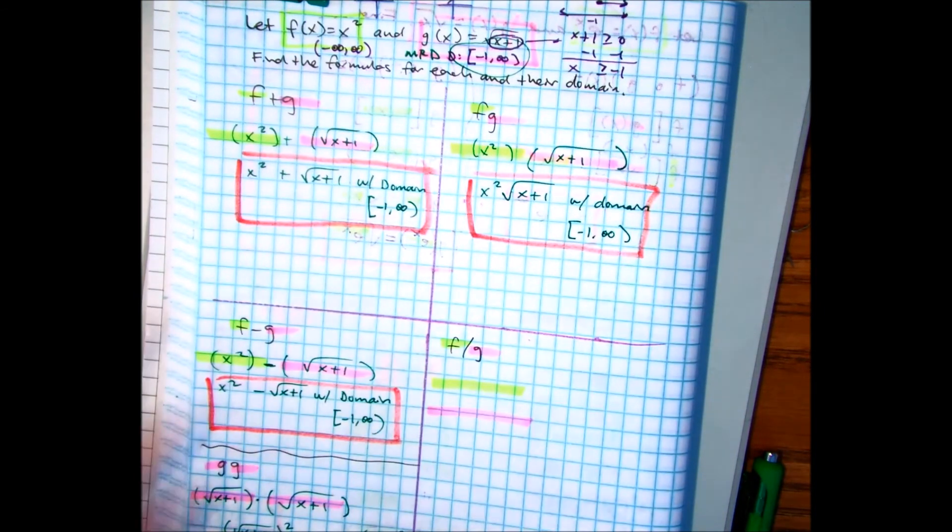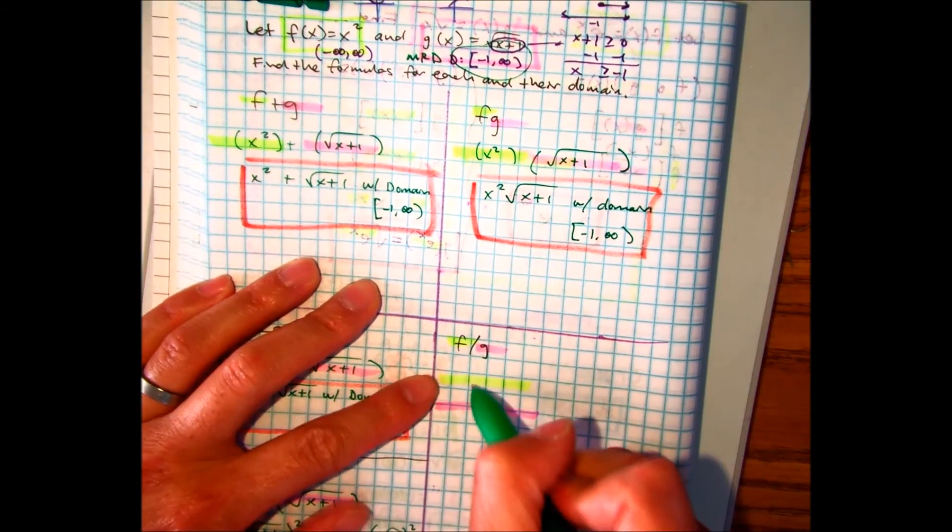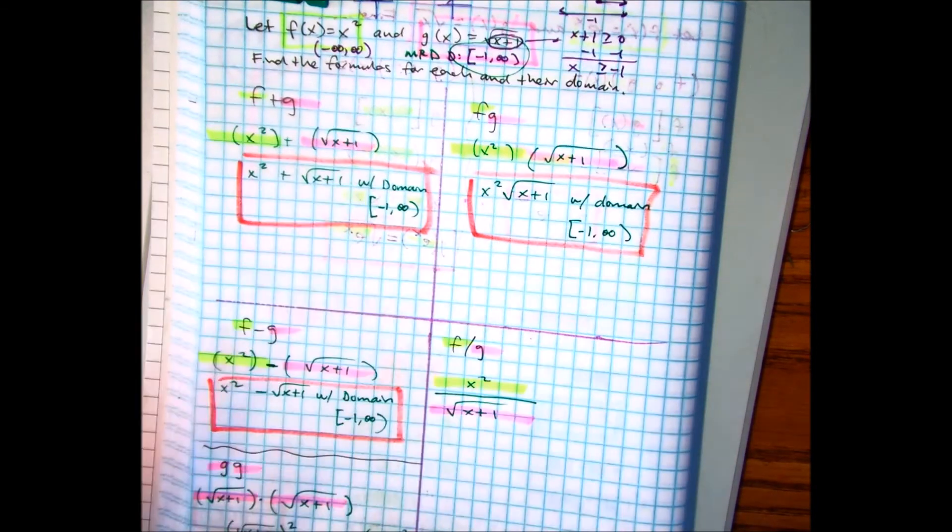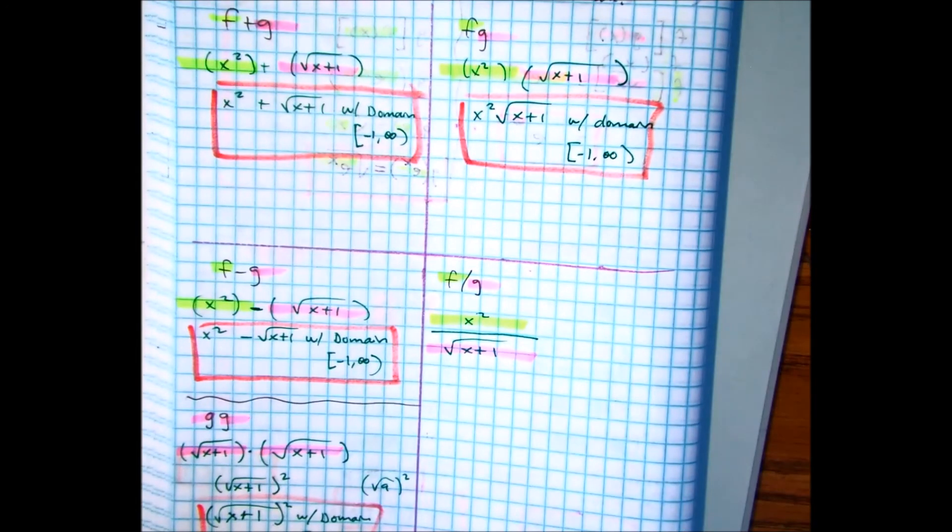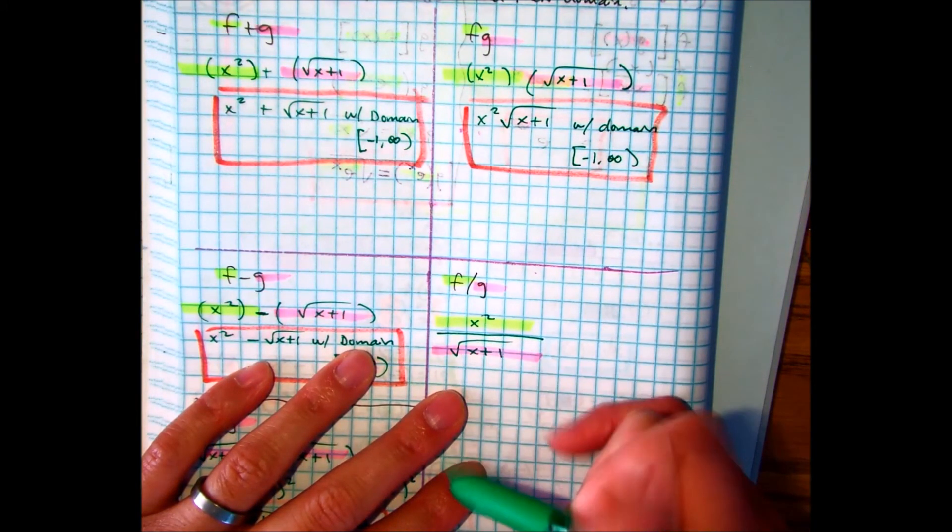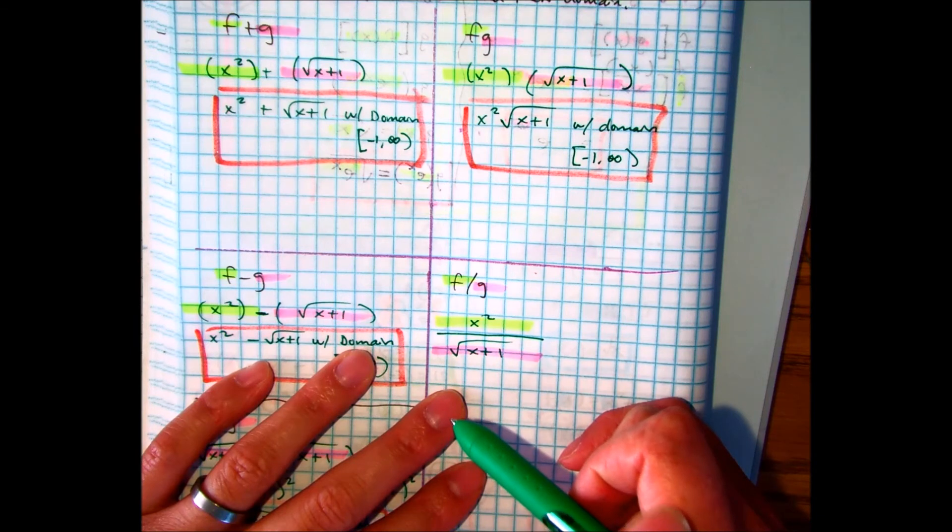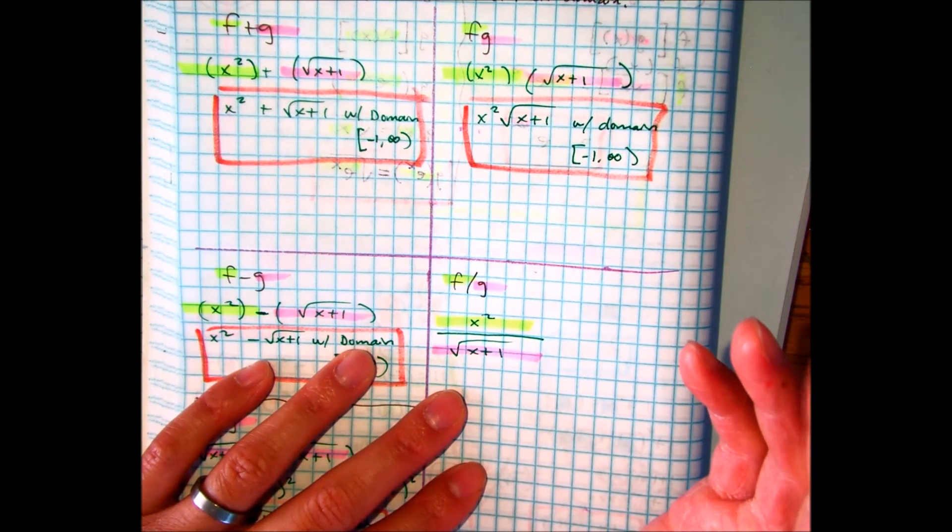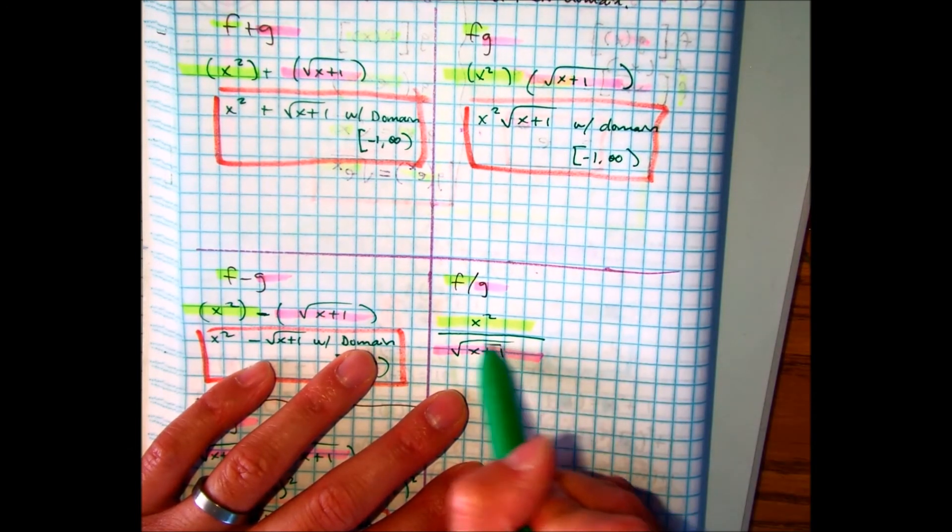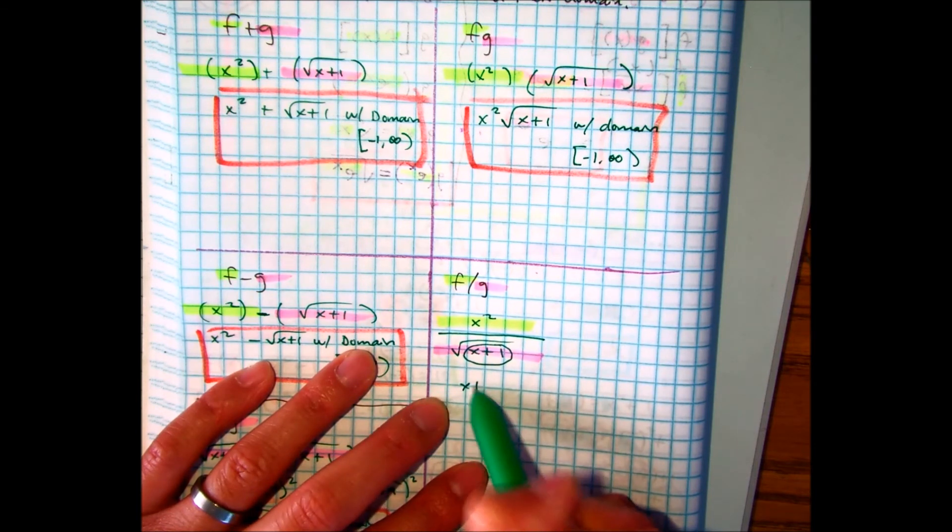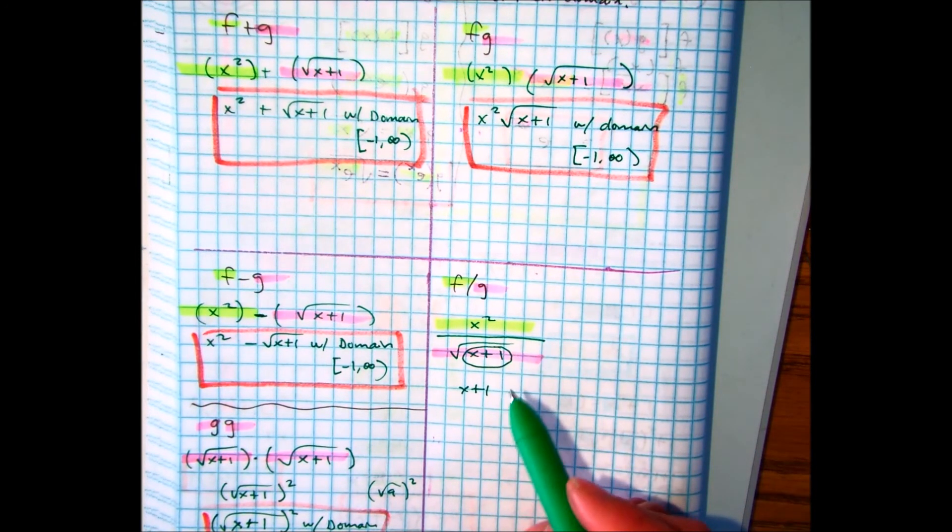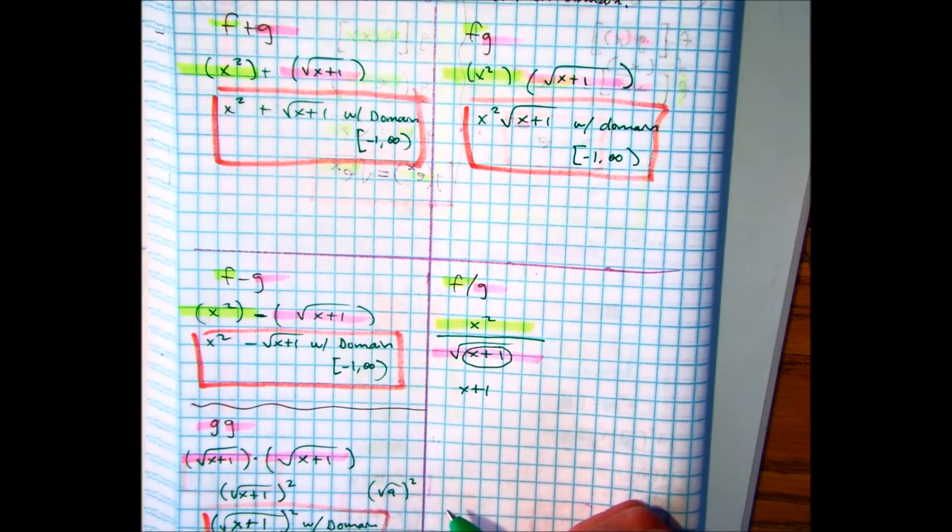All right, this is a tricky one. Ready? f divided by g is x squared over square root of x plus 1. But here, you should be thinking about a rational function. A rational function basically says we do not want this equal to 0. Correct? Okay, then you have to think about which problems do I not want to be equal to 0. So, in this problem, pay attention, I'm going to set that equal to what? Your choices are not equal to 0, greater than 0, or greater than or equal to 0. Five seconds, talk to your partner.